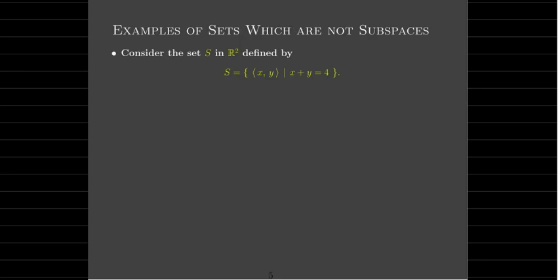Let's look at a couple of sets that are not subspaces. Our first set is a familiar set in R2: all vectors whose components sum to 4, that is, x plus y equals 4. If we graph that, it's a line with slope negative 1 passing through the y-axis at y equals 4. But is this a subspace? No — you can add your way out of it. Let me show you with an example.